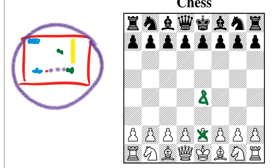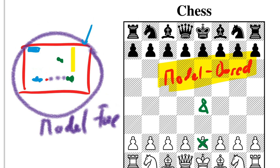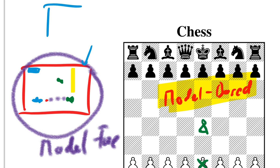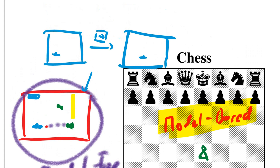Usually for Atari people use model-free reinforcement learning, while for chess you'd use model-based. What MuZero does is use model-based planning but it learns the model. It tries to construct a model for Atari — if I have this screen and I press a button, then probably my submarine is going to be a bit more to the right. But it doesn't do this exactly, and learning this exact environment model has been done before.